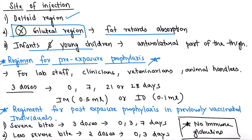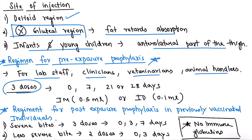In infants and young children, the vaccine can be given in the anterolateral part of the thigh. Now for pre-exposure prophylaxis — given when there is no bite, for lab staff, clinicians, veterinarians, and animal handlers — only three doses are given on days 0, 7, and 21 or 28. The IM dose is 0.5 ml and the intradermal dose is 0.1 ml.